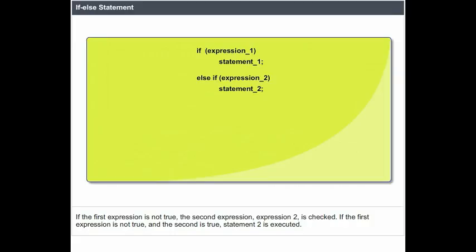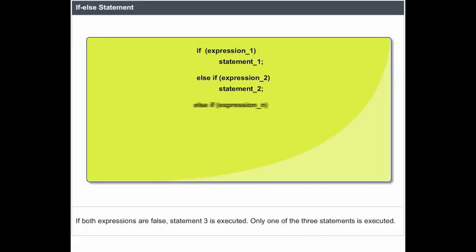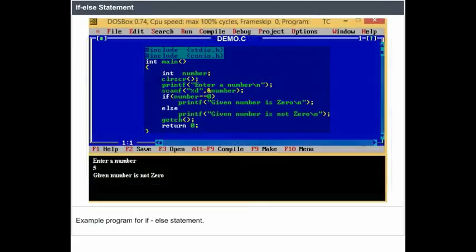If the first expression is not true and the second is true, statement 2 is executed. If both expressions are false, statement 3 is executed. Only one of the three statements is executed. Example program for the if-else statement.